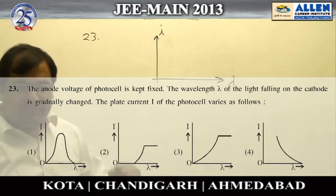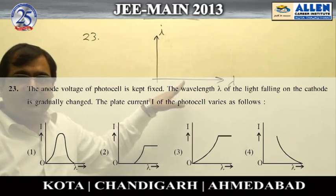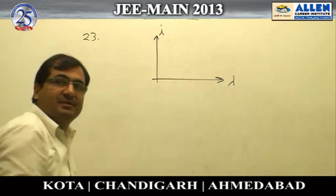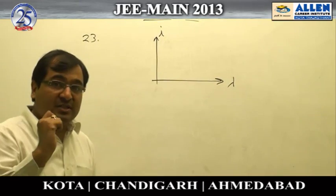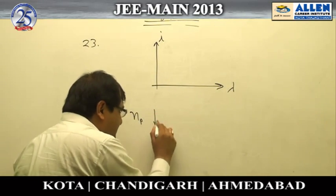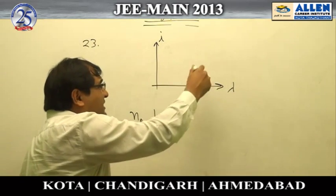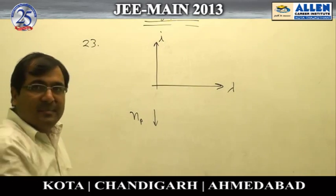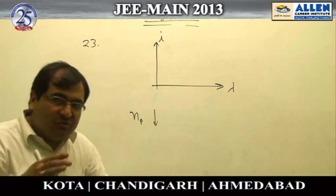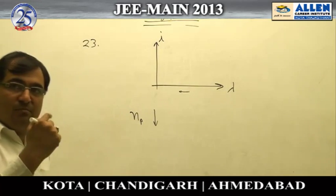Question number 23 asks about the variation of current with wavelength. When we decrease wavelength, assuming constant intensity of light, the number of photons decreases. If the number of photons is decreasing, one would conventionally expect the current to decrease as wavelength decreases and increase as wavelength increases.